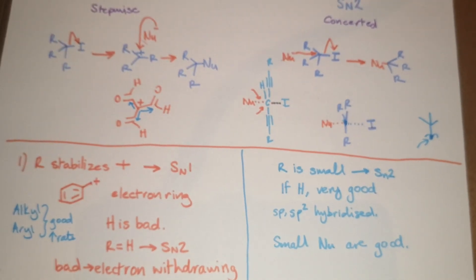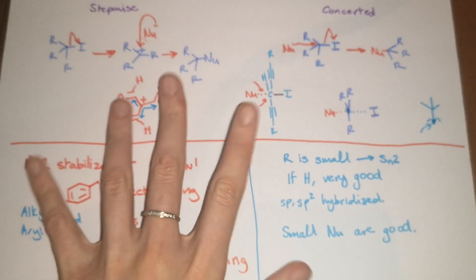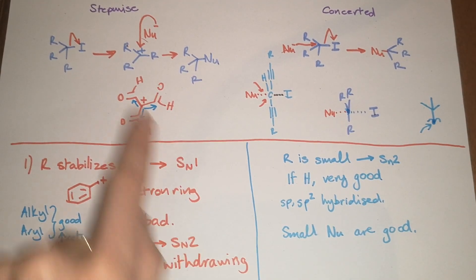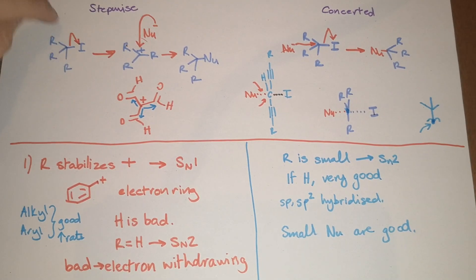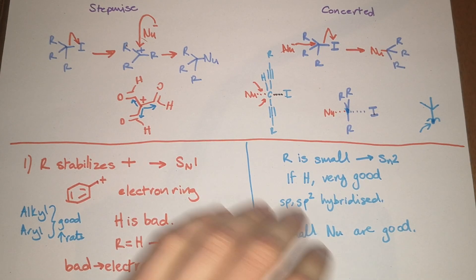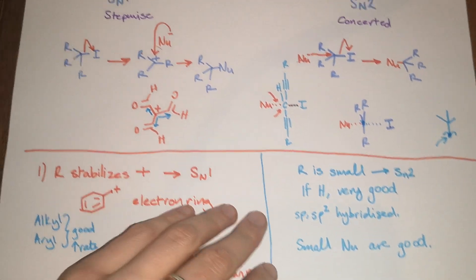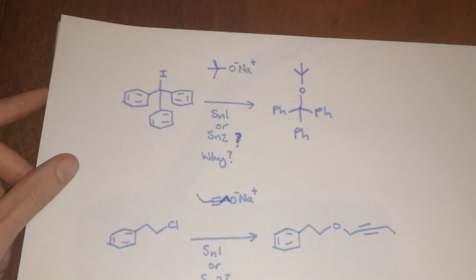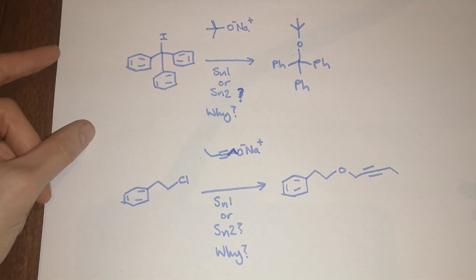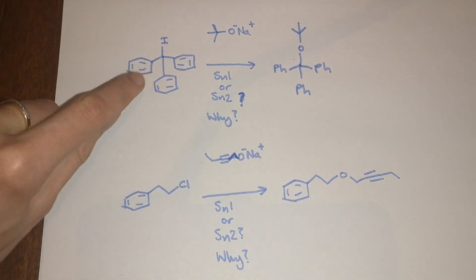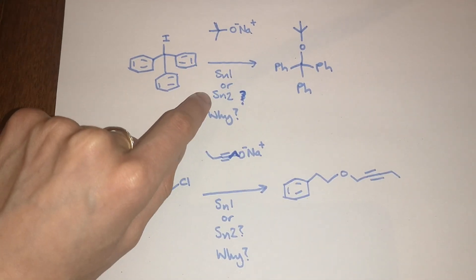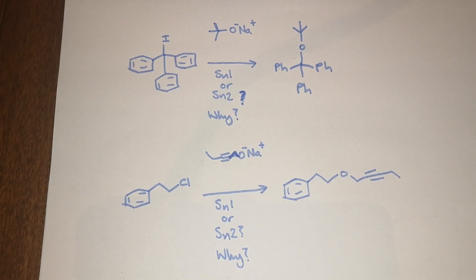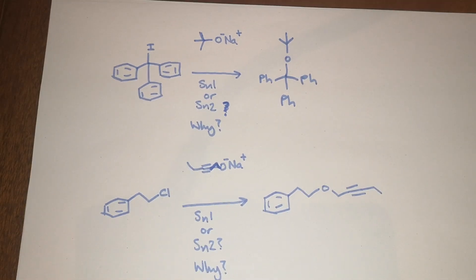A common question that will come up is you'll be shown two reactants — a molecule and a nucleophile — and you'll be asked whether you'd expect this to be an SN1 or an SN2 reaction. I have some examples here to go through. It might be a good idea to pause the video and try to predict yourself whether it's going to be SN1 or SN2, and explain the reason why you think that is.